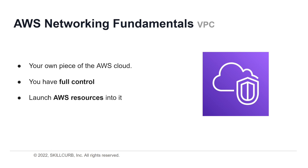So what is a VPC? A virtual private cloud, or VPC, is a private subsection of AWS that you control, into which you can place AWS resources such as EC2 instances and databases, and you have full control over who has access to those resources. Amazon defines it as a logically isolated section of the AWS cloud where you can launch resources in a virtual network that you define, with complete control over your IP address range, subnets, route tables, and network gateways.